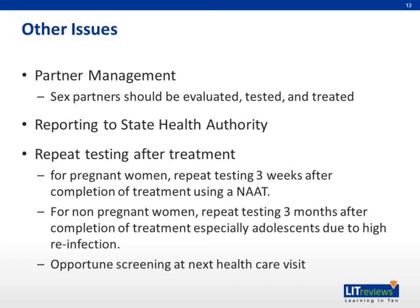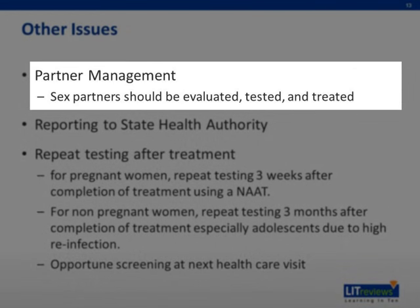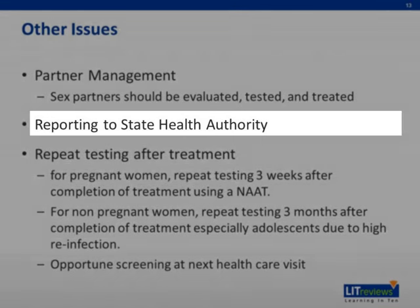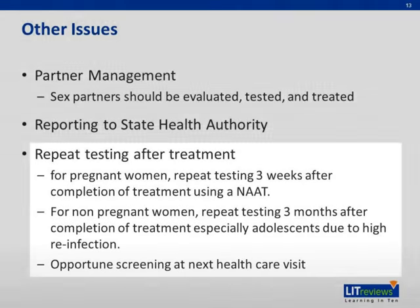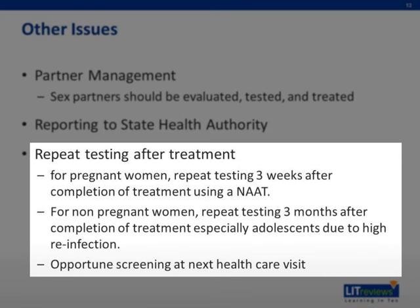Other issues to consider in the management of patients with chlamydia infections include partner management — sex partners should be evaluated, tested, and treated accordingly. Reporting to the state health authority is required. For pregnant women, repeat testing should be done three weeks after completion of treatment using a nucleic acid amplification test method. For non-pregnant women, repeat testing three months after completion of treatment is recommended, especially for adolescents due to high reinfection rates. Opportunistic screening at the next health care visit is also advised.